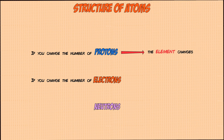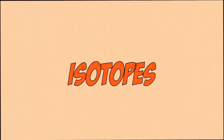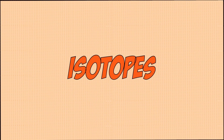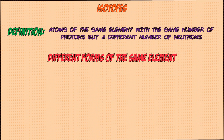If you were to change the number of electrons in an atom and keep the number of protons the same, the element of that atom would not change. Instead, the atom would become a charged ion, which we'll talk about in a different video. If you were to change the number of neutrons in an atom, its element would still stay the same but the atom would change to an isotope of that element. Isotopes are defined as atoms of the same element with the same number of protons but a different number of neutrons.